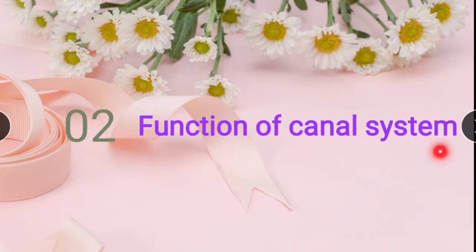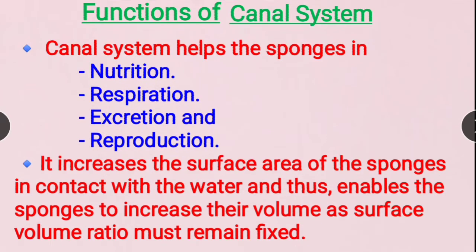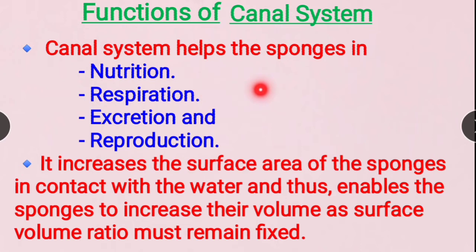Functions of the canal system: the canal system helps sponges with nutrition, respiration, excretion, and reproduction. For nutrition, the water current flowing through the canal system brings food particles. For respiration, the canal system brings in oxygen and removes carbon dioxide — this is how gas exchange occurs.